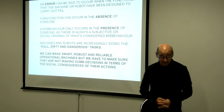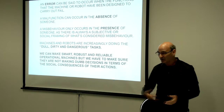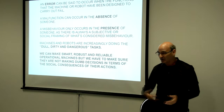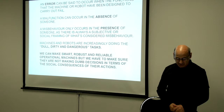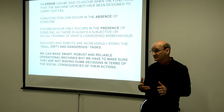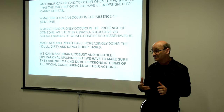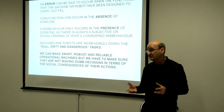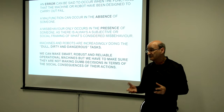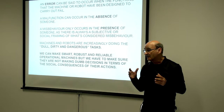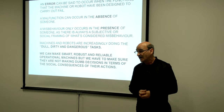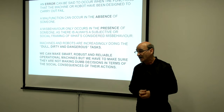We know now that machines are doing increasingly dull, dirty and dangerous tasks — this is traditionally what robots do instead of humans. We can make smart, robust and reliable operational machines, but that doesn't guarantee they're not capable of making dumb decisions. A decision-making process depends not only on the operational automation or effectiveness of that machine, but on its social context and how that decision is made within an increasingly dynamic and unstable set of circumstances.